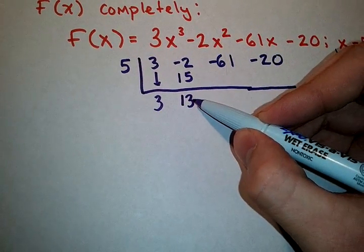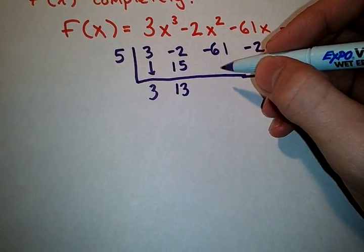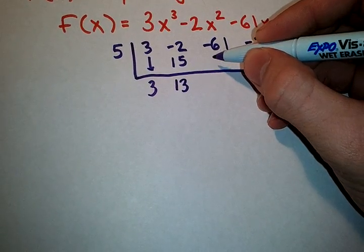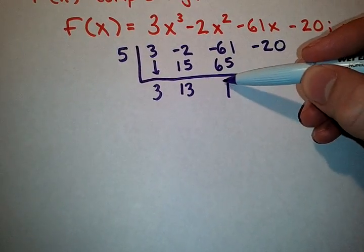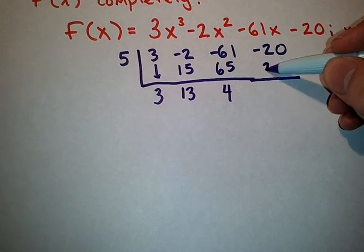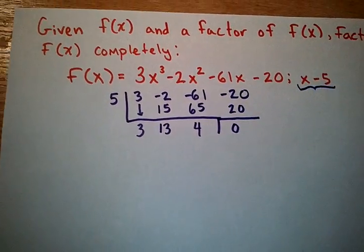Multiply diagonally. 13 times 5 gives me 65. Add down on the column. 4 times 5 is 20. We should get a remainder of 0.